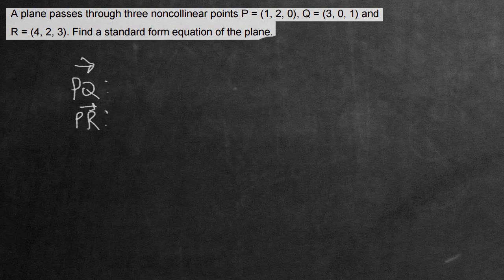So we're going to be doing 3 subtract 1, that's 2. 0 subtract 2 is negative 2, and 1 subtract 0 is 1. That's the first vector, now P to R vector. We're going to have 4 subtract 1 is 3, 2 subtract 2 is 0, and 3 subtract 0 is 3.